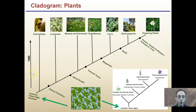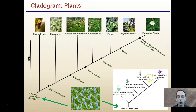This cladogram gives you the basic progression. Green algae starts at the base. Going to seedless non-vascular plants, then to seedless vascular plants with the development of vascular tissue, then to naked seed plants or gymnosperms — also known as pine trees — and ultimately to flowering seeded plants called angiosperms. There'll be more detail provided on each of these, but that gives you the basic direction of the proposed evolution of plant species.